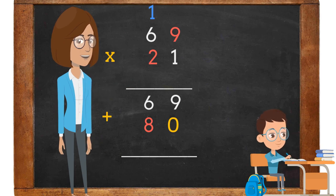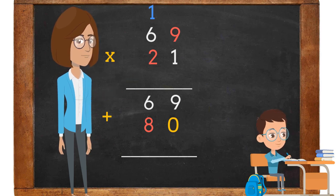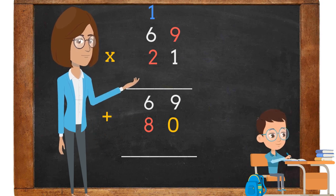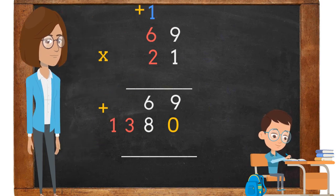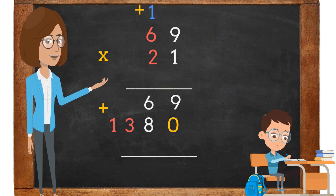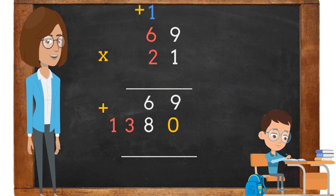First, place a 0 in the ones place under the 9. Next, we will place an 8 under the number 6 and a 1 above the 6 in the tens place. We are going to multiply 2 times 6. 2 times 6 is 12. Next, we will add the number 1 to the 12. 1 plus 12 is 13.